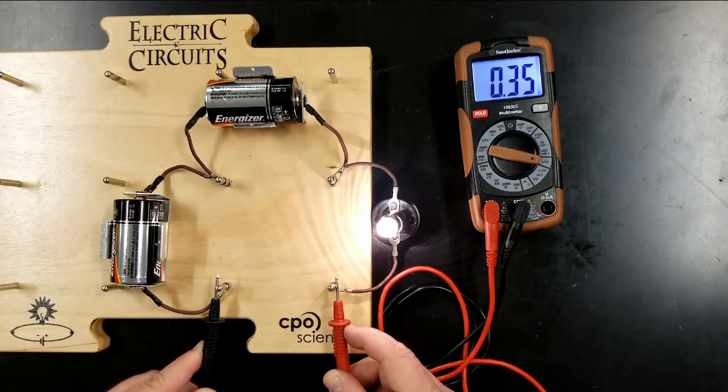And again, an ampere is a coulomb per second. Coulomb per second.